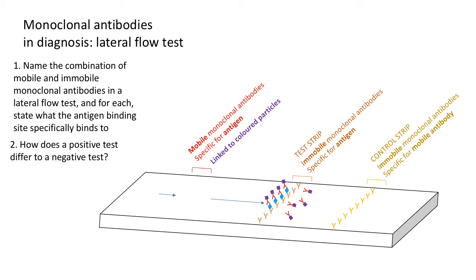There will be an excess of mobile antibodies, so some mobile antibodies won't be bound to antigen and won't bind to the test strip. These continue moving along and eventually reach the control strip. The antibodies at the control strip bind to the mobile antibody, so they bind there and show that the test has been successful. You always need a line at the control strip to know that the test is valid.